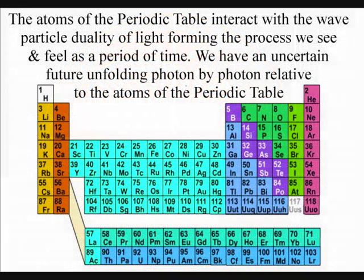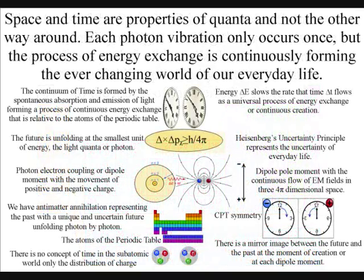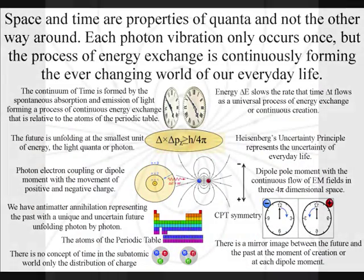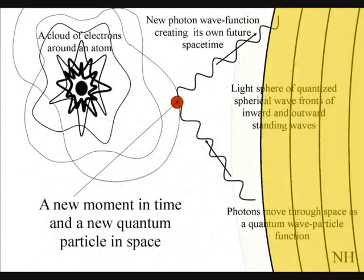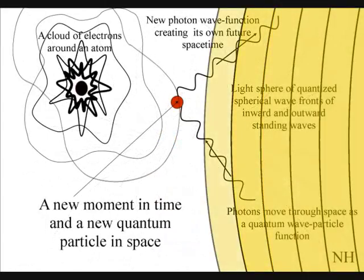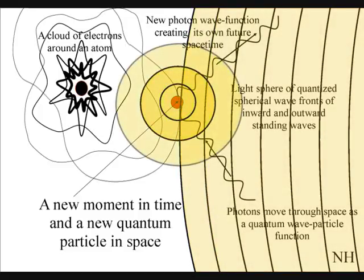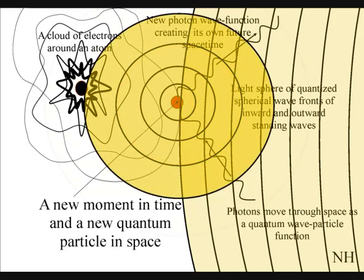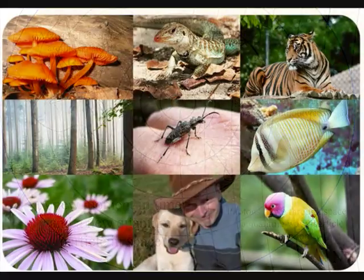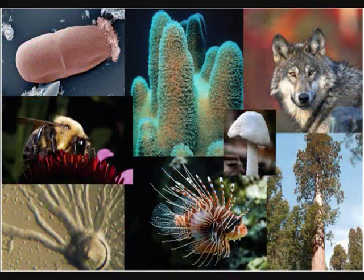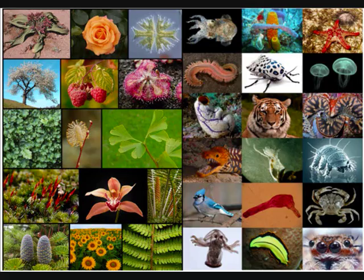The future is continually unfolding with an exchange of photon energy relative to the atoms of the periodic table. The uncertainty of everyday life is formed at the smallest scale of this process by light interacting with the electron probability cloud that surrounds each atom. This process is relative to the different structures that the atoms form, with different phase changes in matter changing how the process unfolds at different temperatures.